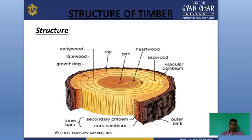The number of rings defines the age of the tree. The main structure of a tree includes the following components: inner bark, outer bark, vascular cambium, sapwood, heartwood, pith, medullary rays, early wood, and late wood.